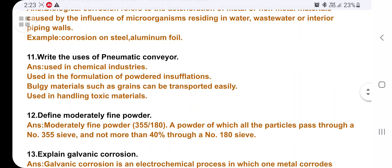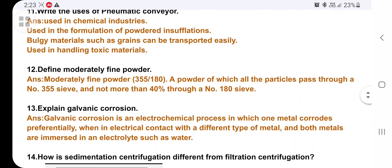Write the uses of pneumatic conveyor. It is a conveyor belt used in chemical or pharmaceutical industries, mainly in the formulation of powdered insufflations. Also, bulky materials such as grains can be transported easily. Also used in handling toxic materials.